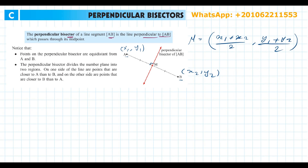Notice that the points on the perpendicular bisector are equidistant from A and B. If L is any point on the perpendicular bisector, then the length from A to L equals the length from L to B.